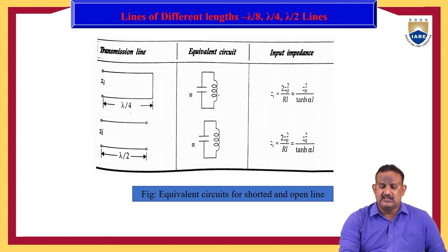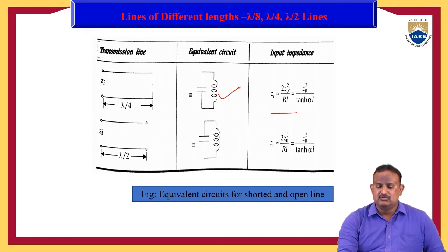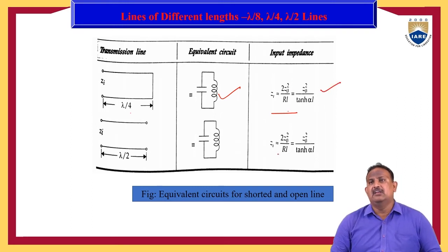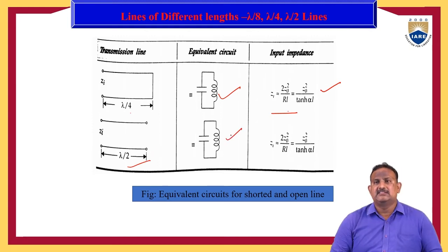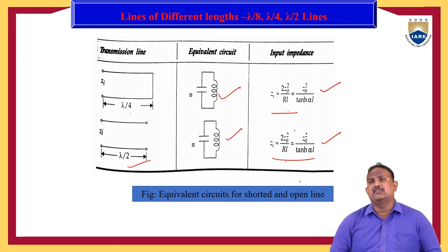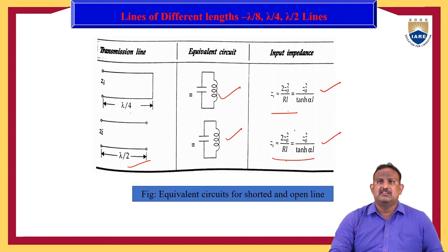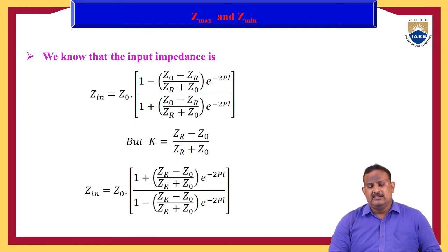When the length of the transmission line is lambda by 4, it behaves as a tank circuit and the input impedance is Z_i = Z₀²/tanh(αl), where α is the attenuation constant. Similarly, if the length is lambda by 2, it also behaves as a tank circuit with Z_i = Z₀²/tanh(αl). So depending upon the length, the transmission line behaves as different types of circuit.